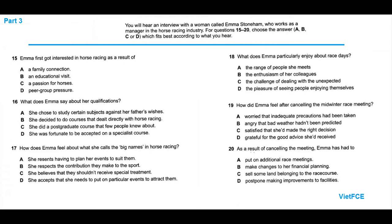My guest today is Emma Stoneham, who's Managing Director of the Local Racecourse, a business with a turnover of over £2 million a year. The surprising thing about Emma is that, at the age of 24, she's the youngest racecourse MD in the country. How do you come to know so much about racing, Emma? The industry's in my blood. It's as simple as that. I get a fantastic buzz out of every aspect of it, and I always have. I went to school not far from a racecourse, where my dad worked, so it was a fair bet I'd get hooked on the sport from an early age.